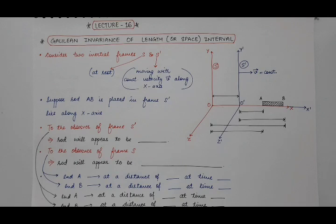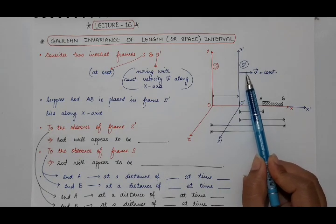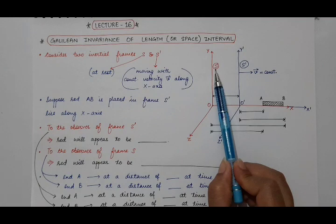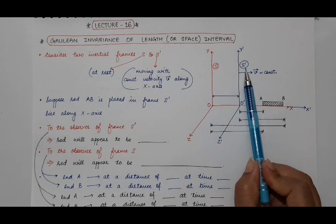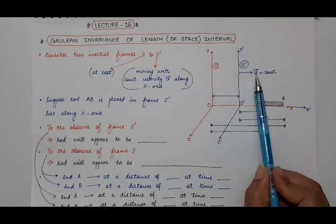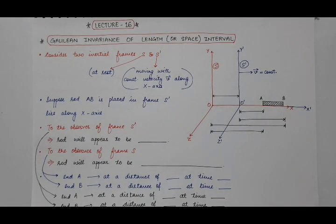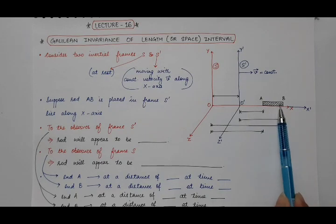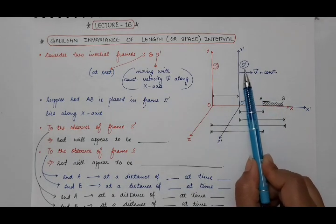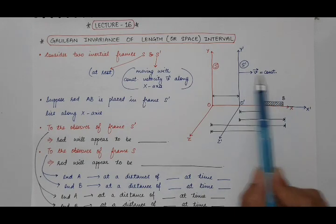For this, we have considered two inertial frames, S and S'. Inertial frame S is at rest, and inertial frame S' is moving with constant velocity V with respect to the inertial frame S at rest, along the x-axis. To prove that length is Galilean invariant, we will find the length of a rod. Suppose we have a rod AB which is placed in the moving frame S', and S' frame is moving with velocity V with respect to S.